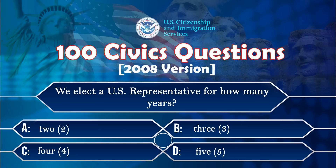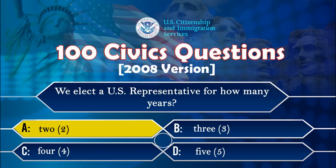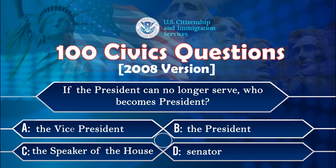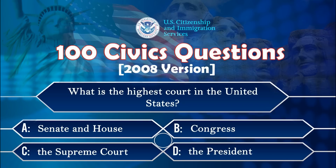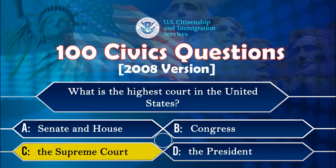We elect a US representative for how many years? Two. If the president can no longer serve, who becomes president? The vice president. What is the highest court in the United States? The Supreme Court.